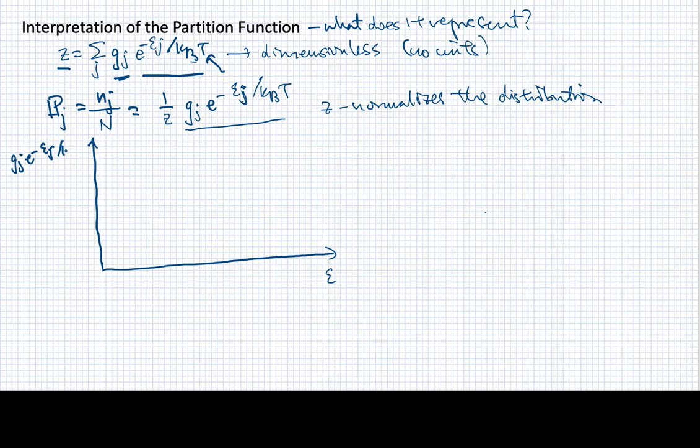And what I'm going to draw is this Boltzmann factor. So I'm going to draw g sub j e to the minus ej over kBT. And I'm going to also make the assumption, not a bold one, but nevertheless an assumption, that the degeneracy of the lowest energy state is 1. So, the reason I do that is just so I can actually give a value here to this value when energy is equal to 0. All right, so this is where I'm going to start. What I have here is an exponential decay function.